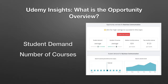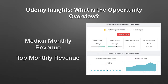The first two are the student demand — that's the amount of demand there is from students in Udemy for this topic — and the number of courses, which shows you how many courses are addressing that demand. The median monthly revenue shows you the total revenue generated for this topic divided by the number of courses. A value of 24 is actually not very good; you really like to see that in the high 70s, 80s, or 90s. And the top monthly revenue at $123 is really not very impressive either — it's nice to see that in the thousands.